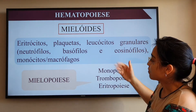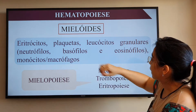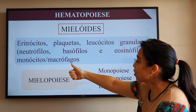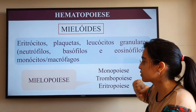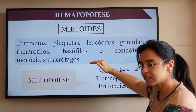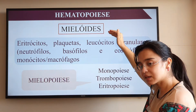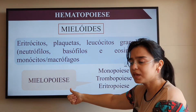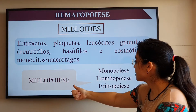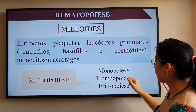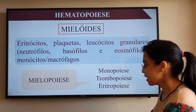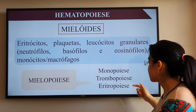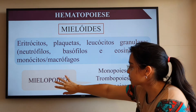As células mieloides incluem eritrócitos, plaquetas, leucócitos granulares — que são os neutrófilos, basófilos e eosinófilos — e os monócitos, que são os precursores dos macrófagos. A síntese dessas células a partir da célula indiferenciada mieloide é chamada de mielopoiese, que engloba também a monopoiese, a trombopoiese e a eritropoiese — todos esses três processos estão contidos dentro da mielopoiese.